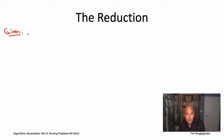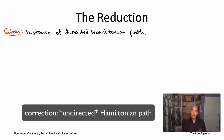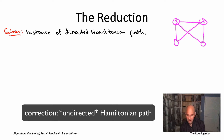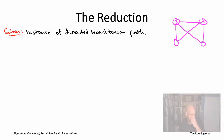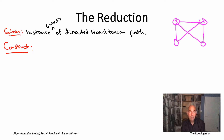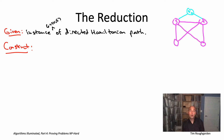The starting point of the reduction is an instance of undirected Hamiltonian path — the known NP-hard problem we're reducing from. We might be given an instance like a four-vertex graph where all edges are present except the one between the two bottom vertices, which has no ST Hamiltonian path. We're going to modify this graph in two simple ways: first, augment it by one additional vertex called V-naught, connected only to S and T, giving us a new undirected graph with one more vertex and two more edges.